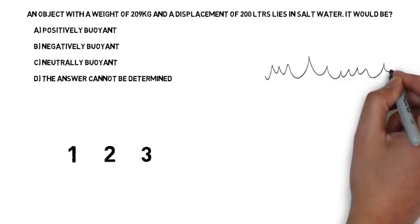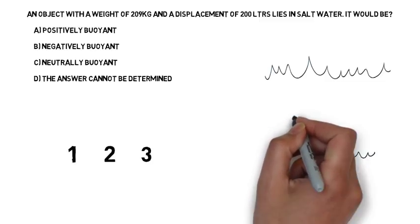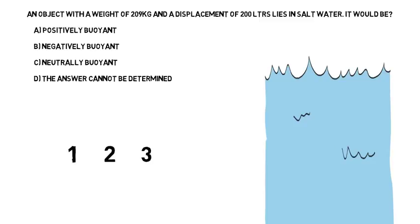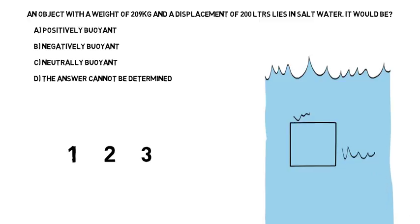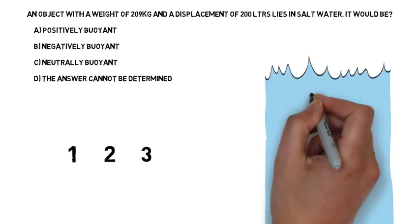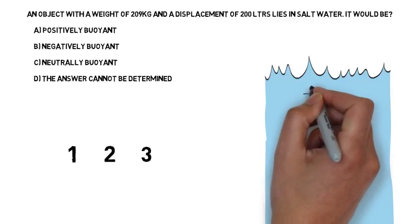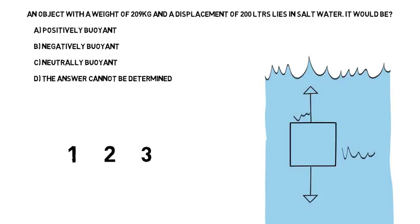We've got a body of water and we have an object in that body of water. We're just drawing a square here. We know that object has a downward force which is its weight in kilograms. We know it has an upward force that is based on its volume and the type of water it is in.